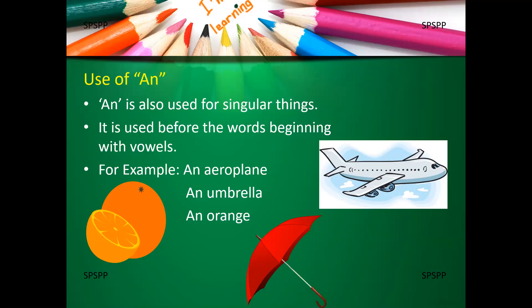Look at the words umbrella and orange. Umbrella begins with U. Orange begins with O. Both the letters are vowels. So, we say an umbrella and an orange.